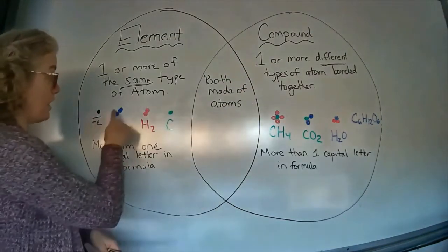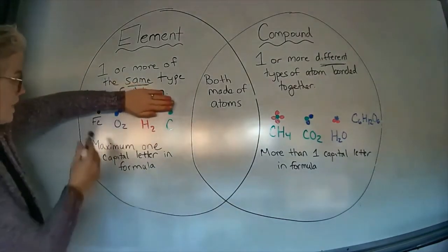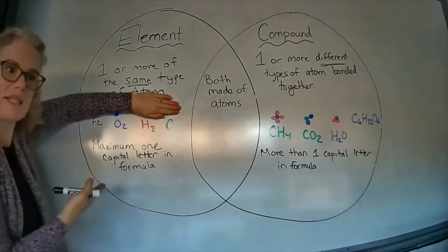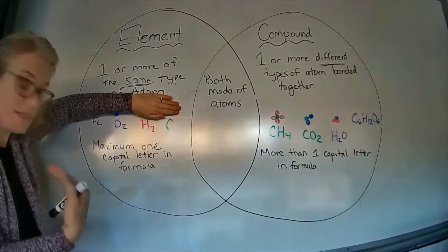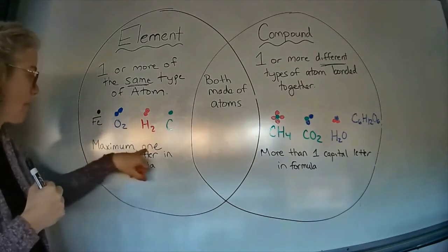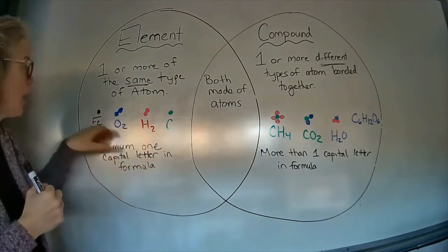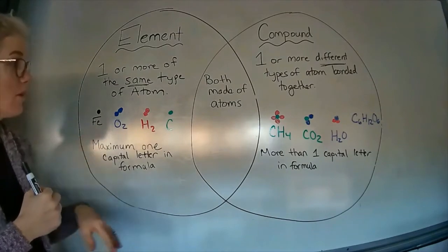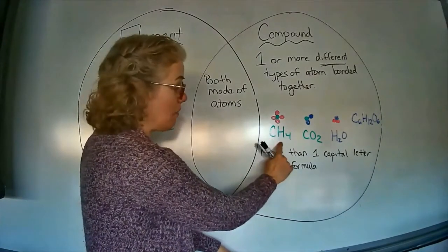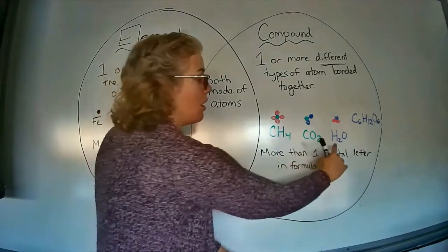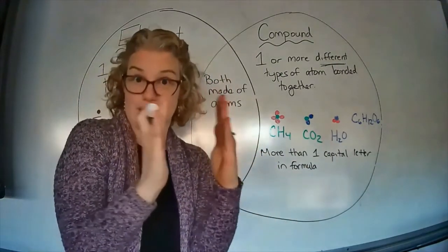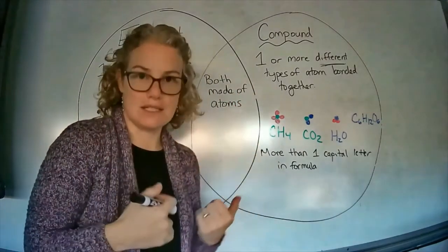You understand now how to tell if there's a picture, but what if you were only given these symbols? These symbols are called chemical formulas, and it's like a recipe telling us what is in a substance. If there's only maximum one capital letter in the formula, then we are talking about an element. Over here, notice these always have more than one capital letter: a capital C, a capital H, a capital C, a capital O. So if there's more than one capital letter and they're all written squished together like it's one word, then that tells us it's a compound.